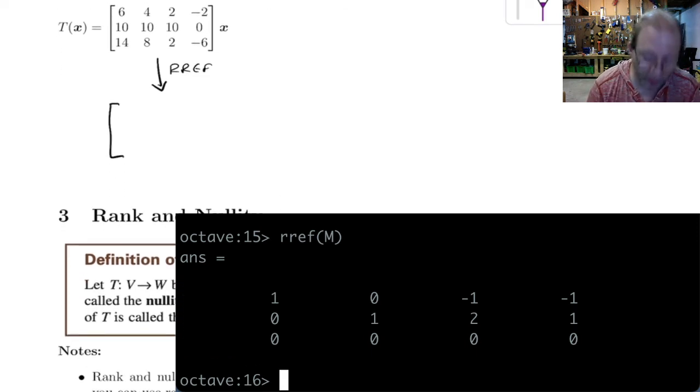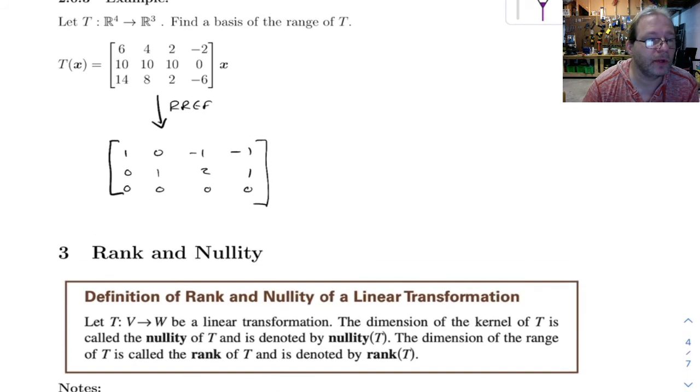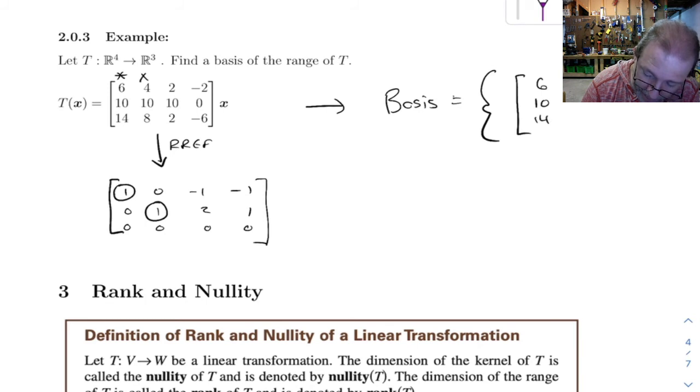And we've got 1, 0, minus 1, minus 1, 0, 1, 2, 1, and then 0, 0, 0, 0. So the important thing is we've got a leading one here and here, and we don't have a third one. So that means that this and this together form a basis. 6, 10, 14, and then 4, 10, 8.